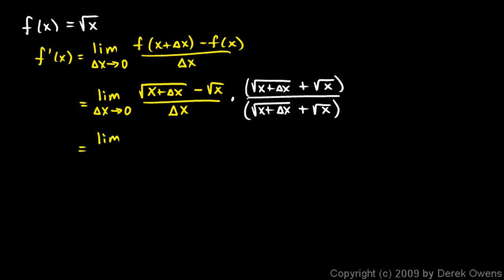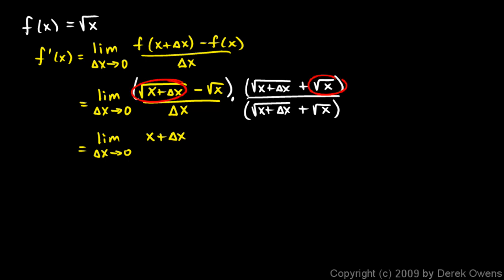So let's work this out. We have the limit as delta x approaches zero, and up top we need to do a FOIL — this is one binomial multiplied by another. When we do the first terms, the square root of this times the square root of this, that's the same thing under the radical in both cases, so that works out to x plus delta x. Whenever you multiply by a conjugate, the outer and inner terms of the FOIL process disappear — the square root of x plus delta x times the square root of x, and the inner negative square root of x times square root of x plus delta x, just cancel out.